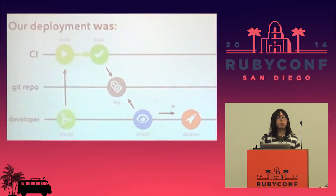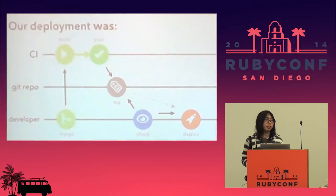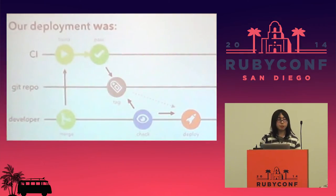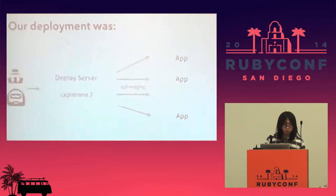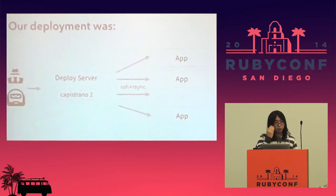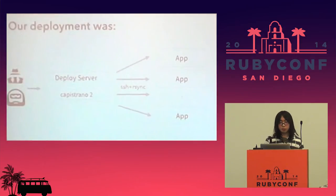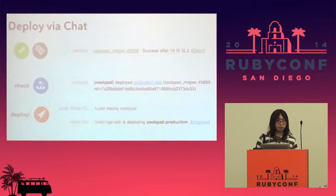Our deployment flow was like this. When a topic branch gets merged, CI will start a build. If it succeeded, CI creates a new git tag, then starts deploying automatically to staging server. Developer checks staging, and finally initiates a deployment to production. Previously, we had used Capistrano with rsync over SSH. We put a deploy server to kick off Capistrano in our infrastructure, because Capistrano takes too much bandwidth, so it can't run from the developer's local machine. And we have chatops too — Hubot deploy kicks off Cap.